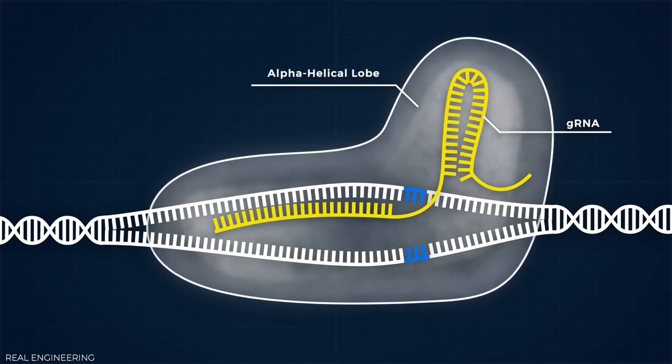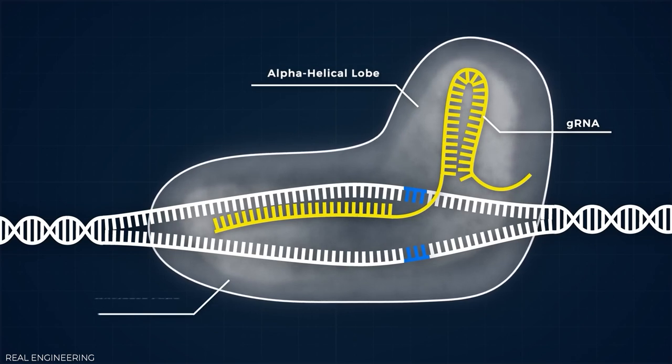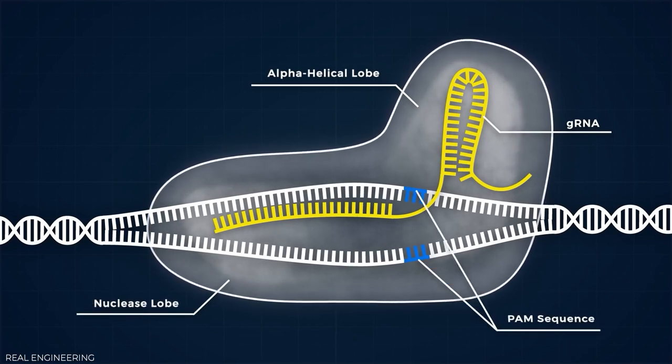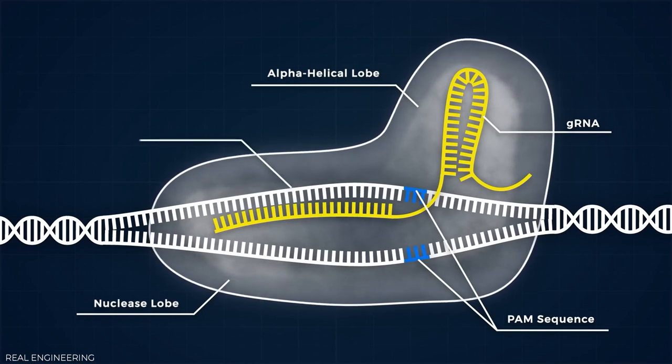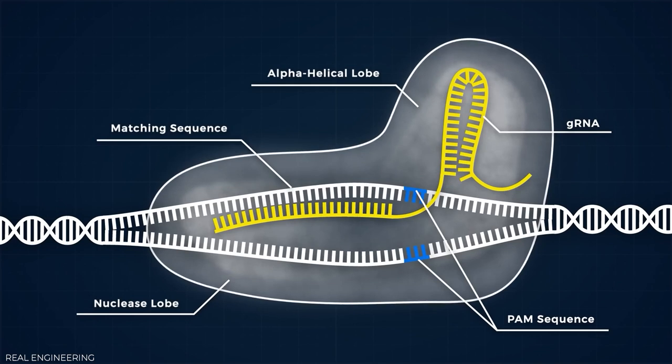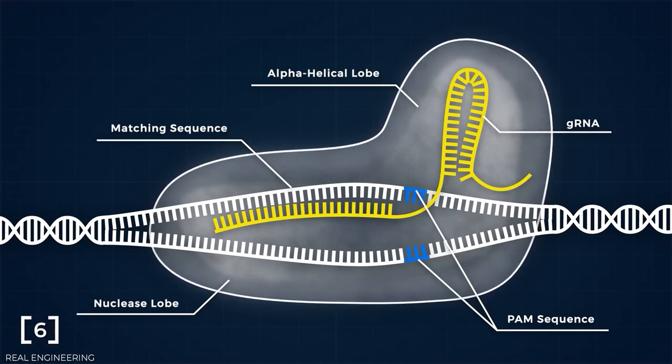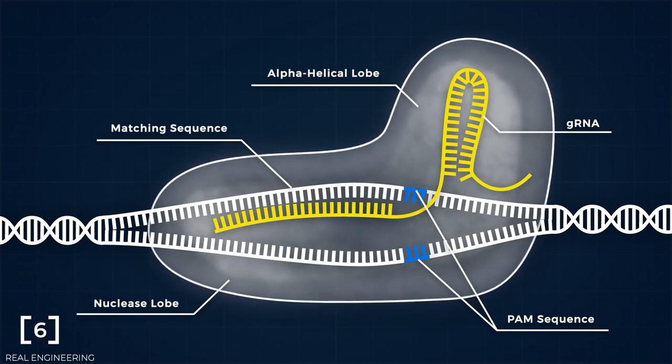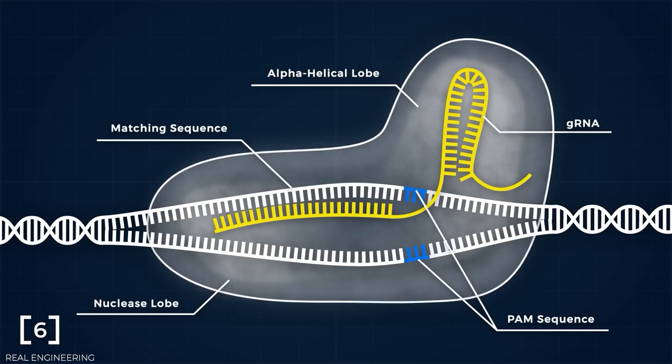The alpha helical globe of Cas9 is where the guide RNA attaches. The nuclease lobe of the other domain of Cas9 then connects to any flanking region of the DNA strands that coincides with the guide RNA, causing the DNA's double helix structure to unwind. The close proximity of the DNA to the Cas9 complex and the electrostatic contacts between the RNA and DNA assist this process.